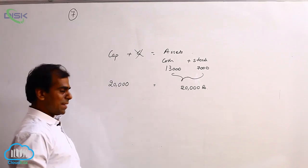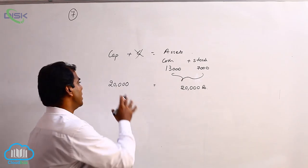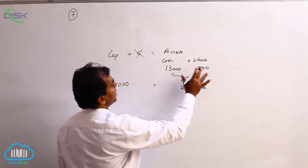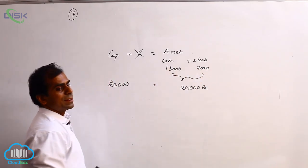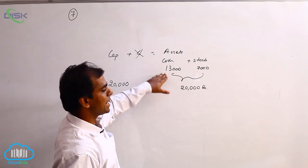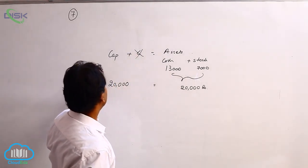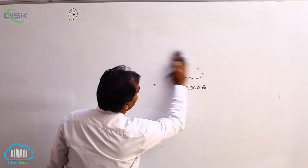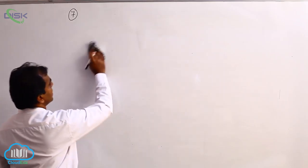So what does it mean? We assume that the owner is giving 20,000 in the form of cash and stock. So the resources we have are two real accounts, stock and cash, which the business is getting from the owner. Based on that we will write our opening entry on 1st March.